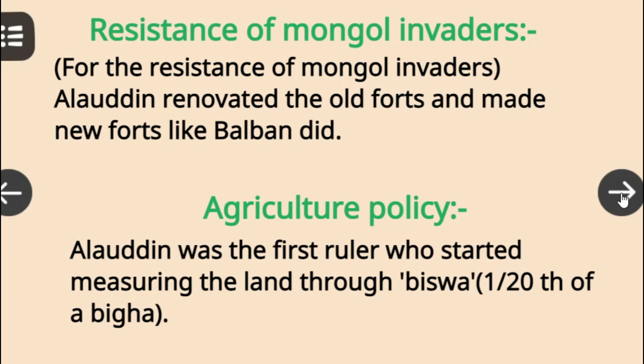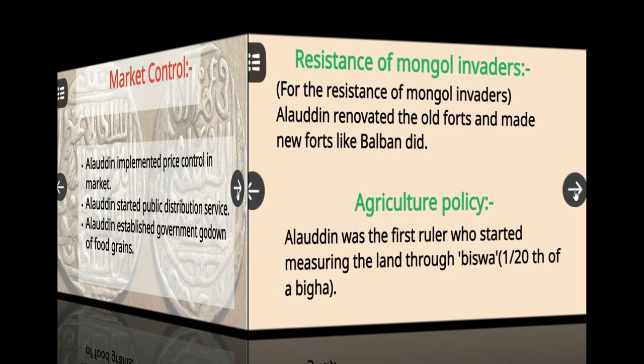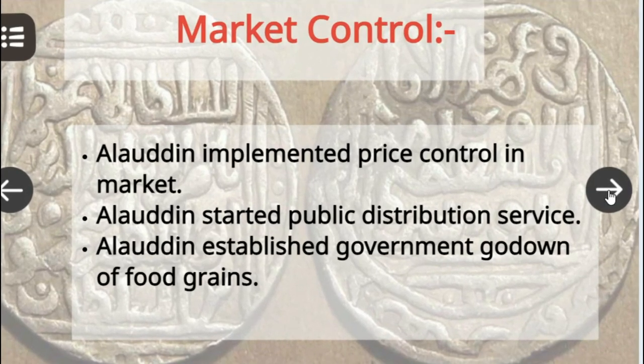Regarding agriculture policy, Alauddin was the first ruler who started measuring land through Biswa, which is 1/128th of a Bigha. Market control was the most important step in his administration — Alauddin implemented price control in the market.